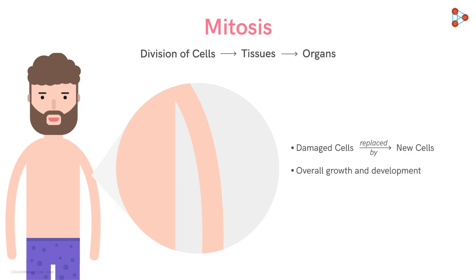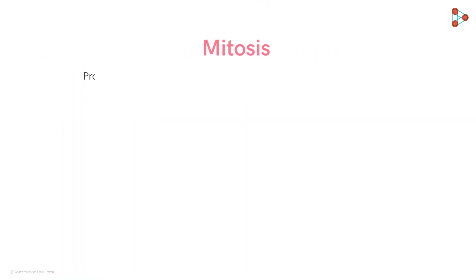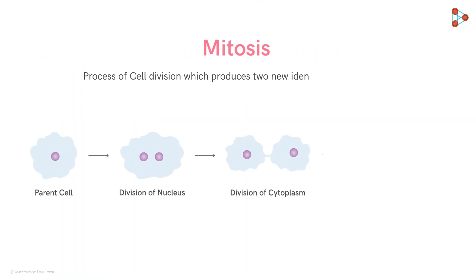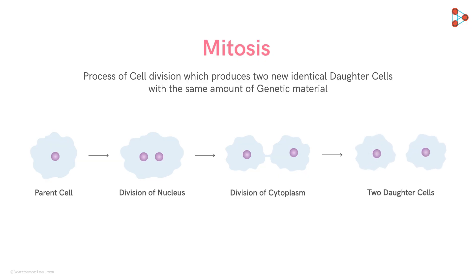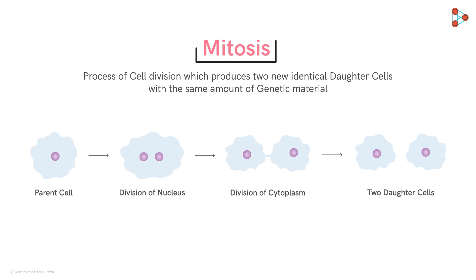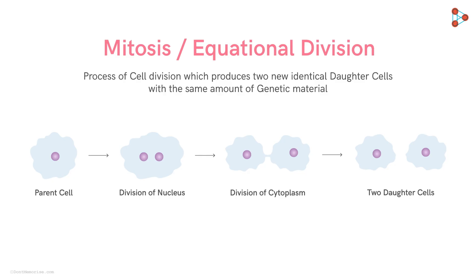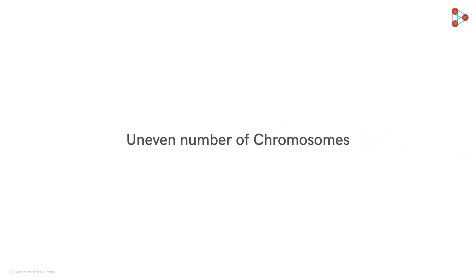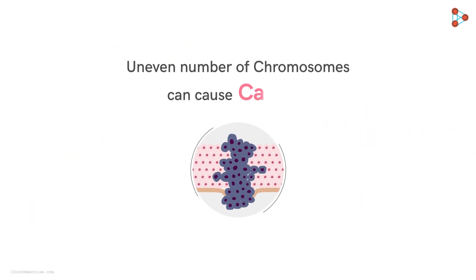So let's have a look at this marvellous process in detail. Mitosis is simply a process of cell division which produces two new identical daughter cells with the same amount of genetic material. These two daughter cells are genetically similar to each other, and this is the reason why mitosis is also called equational division. It's extremely important to maintain the amount of genetic material in any cell, because an uneven number of chromosomes in a cell can lead to abnormalities like cancer.